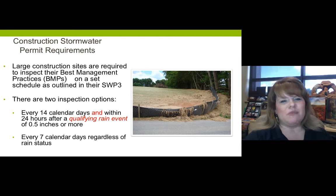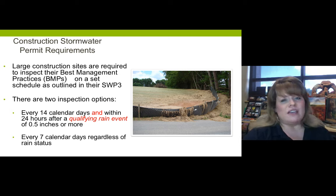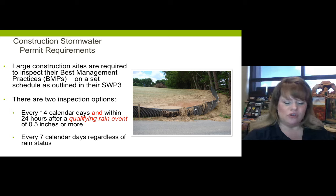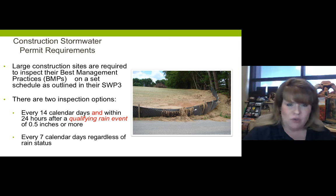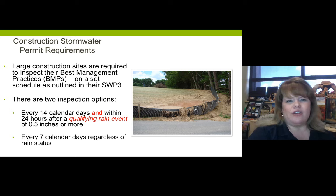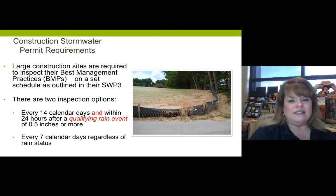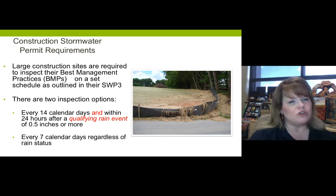Option two might be a better choice: inspecting every seven calendar days without the requirement to go out after every qualifying rain event. If you do your inspection on the same day each week and list that in your SWPPP, your BMPs and construction site are being reviewed more often and you don't have to worry about getting out there after rain. The ultimate goal of site inspections is that when a BMP is failing — like a silt fence that's down — you fix it in a timely manner so that next time it rains we don't have more pollution going to the environment.